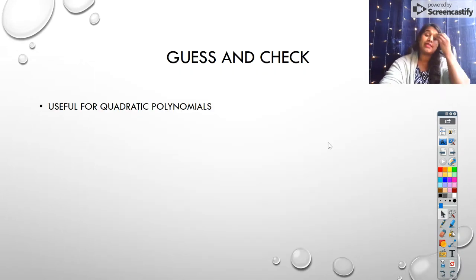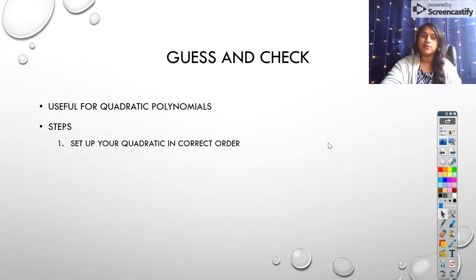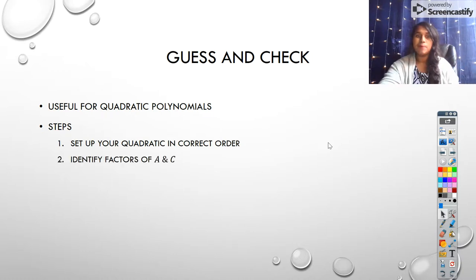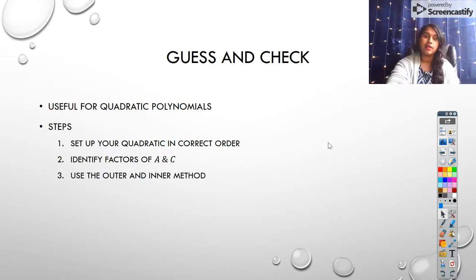But what about our guess and check method? I've mentioned this in class, but this is very useful for quadratic polynomials, especially for those of us who are kind of visual with our methods. But there's very simple steps. So you set up your quadratic in the correct order, A x squared plus B x plus C. You identify your factors of A and C, and I like to write them out. You're going to see exactly how I like to do this.